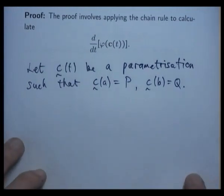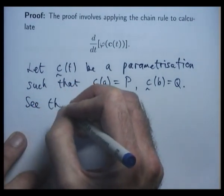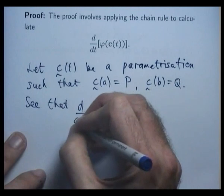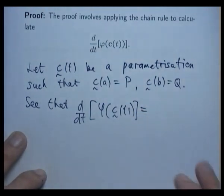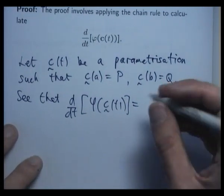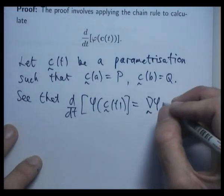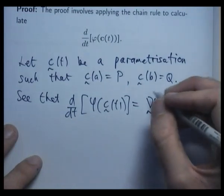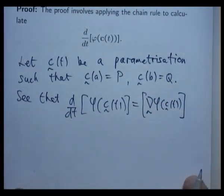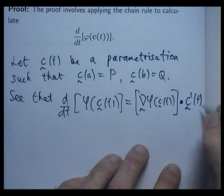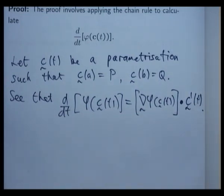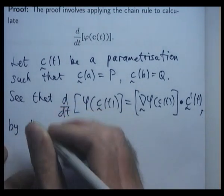All right. So let's calculate this derivative here. Now, the chain rule for paths tells us that it's just grad phi along the parameterization dotted with c dash of t. So how does that help us then? Well, so here we've used the chain rule for paths.